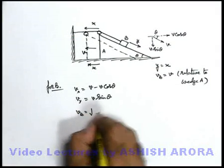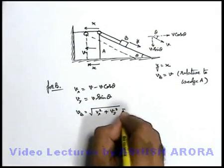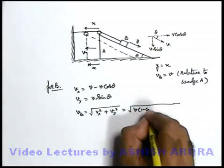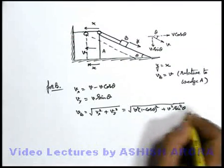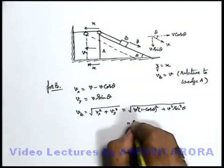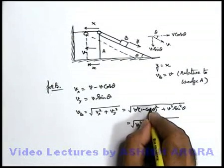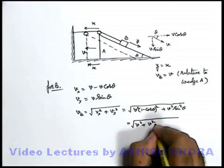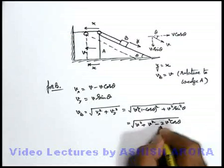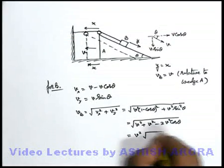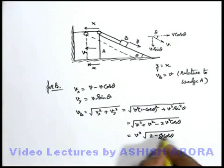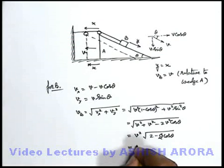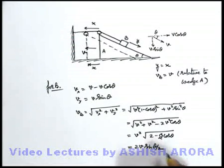The net velocity of block B can be written as the square root of vx squared plus vy squared, which is the square root of (v(1 minus cos theta)) squared plus (v sin theta) squared. Expanding this gives v squared times (1 minus cos theta) squared plus v squared sin squared theta. Taking v common, this simplifies to v times the square root of (2 minus 2 cos theta). Using the half-angle identity, 1 minus cos theta equals 2 sin squared(theta/2), so this becomes 2v sin(theta/2).